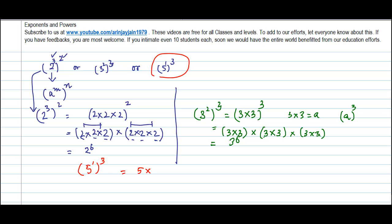Let's take another one: five to the power one to the power three. This can be written as five to the power three.